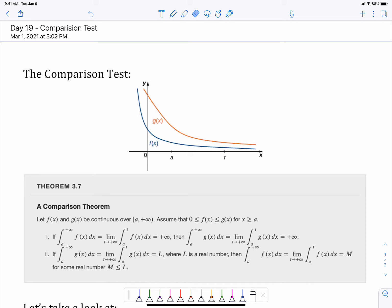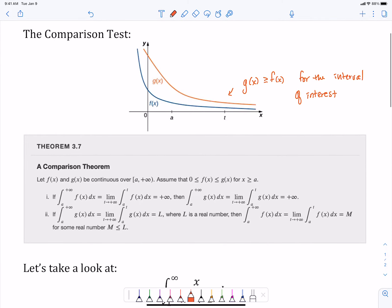So what we're going to be looking at is functions f(x) and g(x), and here's a picture that I stole from our OpenStacks textbook. g(x) is greater than or equal to f(x) for the interval of interest. So g(x) is always greater than f(x).